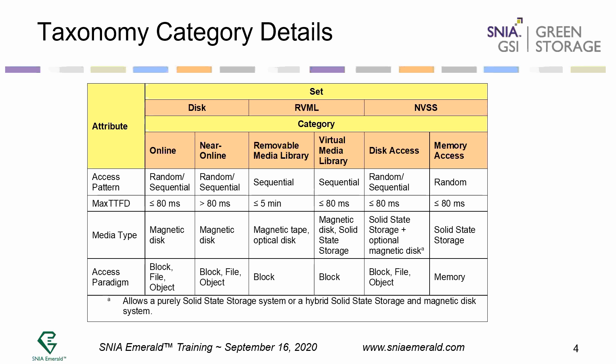In the removable and virtual media libraries, removable media is typically magnetic tape or optical disk. Its access is block and sequential — basically sequential read and sequential write. Virtual media has a much greater access time, less than 80 milliseconds. It uses magnetic disk or solid-state storage with block access, and again sequential access but at higher access speed.